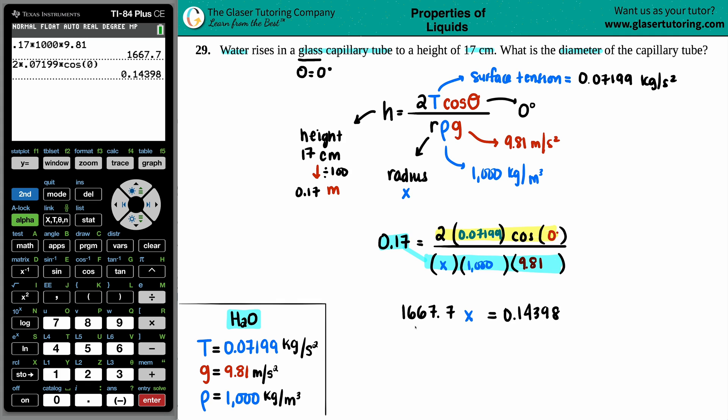Now it just seems like we could just solve for x, divide on both sides by the one thousand six hundred sixty seven point seven. This goes bye-bye, and now we have x equals... I love the TI-84 because I could just go up there, grab my numbers, less chance of error, and press enter.